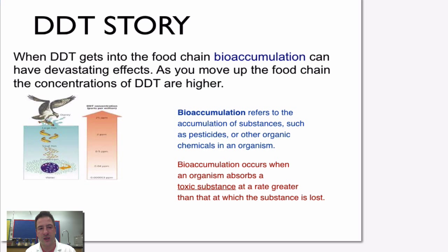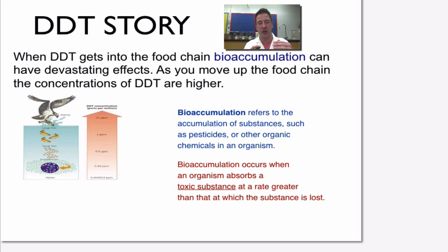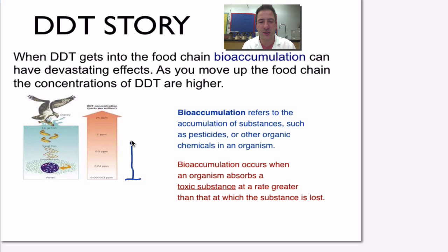How does DDT get into the food chain? It has very harmful effects, and at different levels as it moves through the food chain, the concentration levels increase. It enters into a water supply at the bottom, and notice how the parts per million actually increase as we go up — it's very small at the bottom, gets a little larger, and a little bit larger again as we move up.